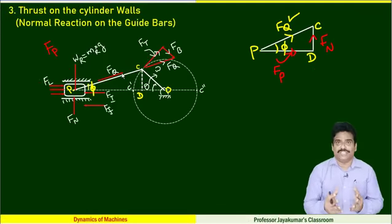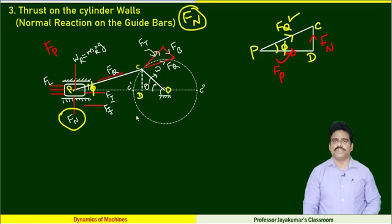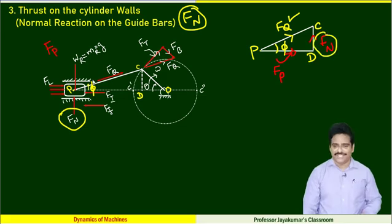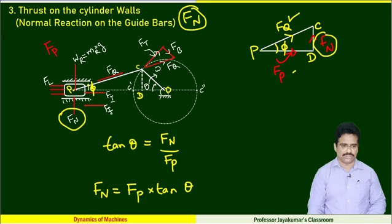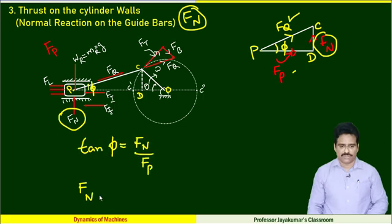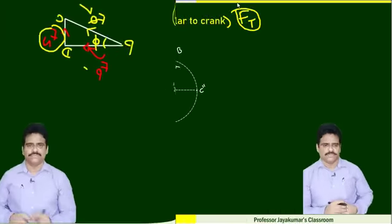The third force is thrust on the cylinder walls, also known as normal reaction on the guide bars — we call it FN. From the right-angle triangle, knowing the piston effort FP, one can find the normal reaction easily. Normal reaction FN = FP × tan(phi).